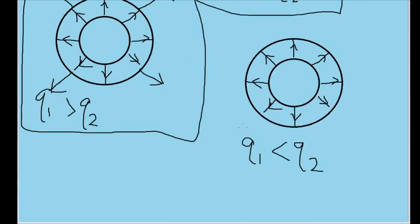In the final case, the magnitude of q sub 2 is greater than the magnitude of q sub 1, indicating that the charge on the outer shell is more negative than the inner shell is positive.